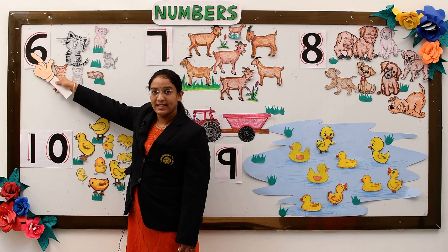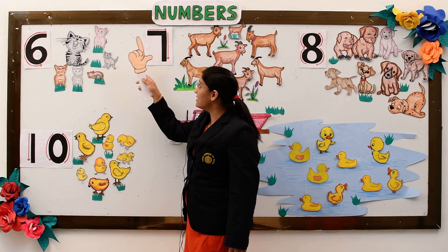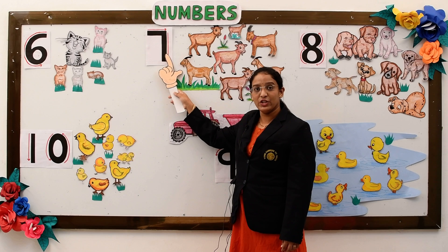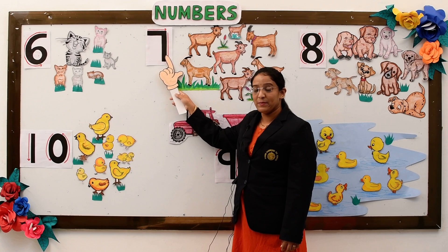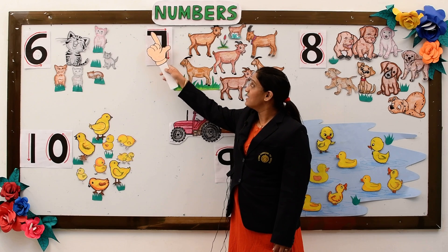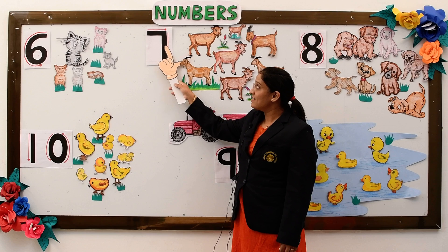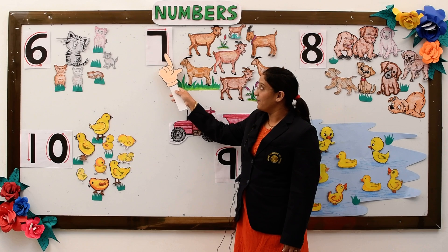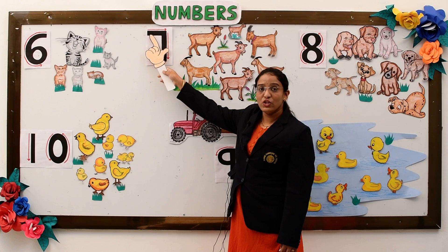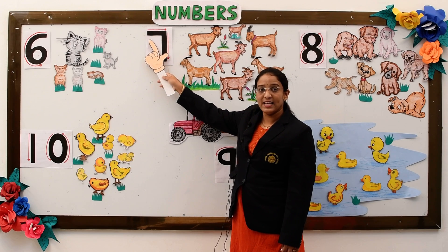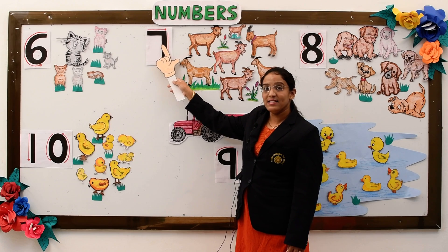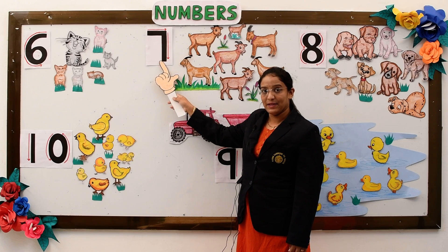The next number is number 7. The formation of number 7 is: a sleeping line and a standing line.